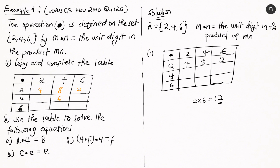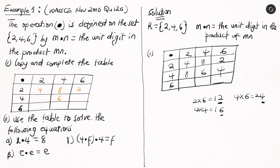For 4 ⊙ 2: 4 × 2 = 8. For 4 ⊙ 4: 4 × 4 = 16, unit digit is 6. For 4 ⊙ 6: 4 × 6 = 24, unit digit is 4. Then for the last row: 6 ⊙ 2 = 12, write 2; 6 ⊙ 4 = 24, write 4; 6 ⊙ 6 = 36, write 6. This completes the table.